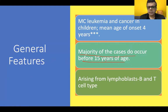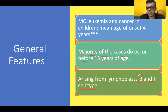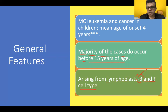Some cases do occur in adolescents and even adults. The leukemic cells could be B lymphoblasts or T lymphoblasts. The majority are of B cell type, so B-ALL is the predominant form. T cell ALL is usually seen in adults and typically presents as a thymic neoplasm or thymic lymphoma.